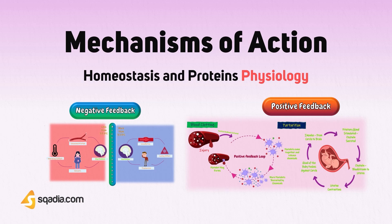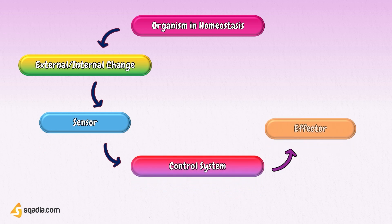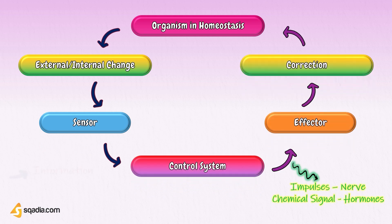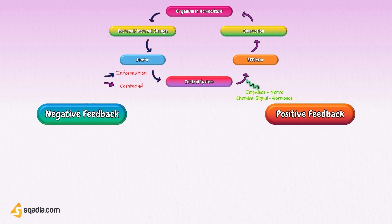The homeostatic mechanism in the body is responsible for maintaining the normalcy of various body systems. Whenever there is any change in the behavioral pattern of any system, the effectors bring back the normalcy either by inhibiting and reversing the change or by supporting and accelerating the change, depending upon the requirement of the situation. This is achieved by means of feedback signals. Feedback is a process in which some proportion of the output signal of a system is fed back to the input, most often intentionally to control the behavior pattern of the system.